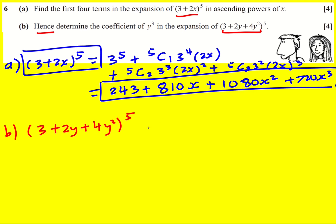I've got the 3 already, but I want 2 times something. So I'm going to factorize the 2 out of the second expression. It's 2 times (y + 2y^2), and all of that to the power of 5. So essentially this is my x.